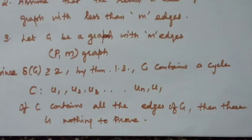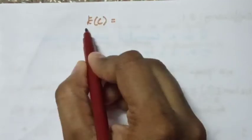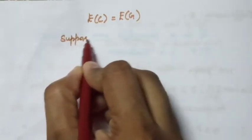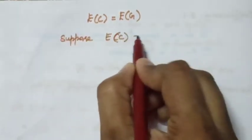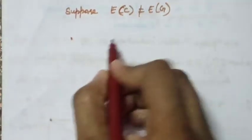In the last video I explained Theorem 2.1, the sufficiency part. If the number of edges in the cycle C is equal to the number of edges in the graph G, then there is nothing to prove. If they are not equal, we have to do the following steps: if edges in the cycle C are not equal to edges in the graph G, we proceed.